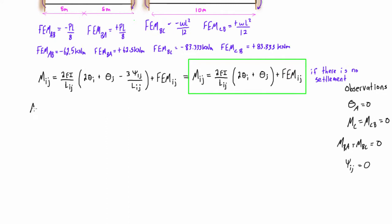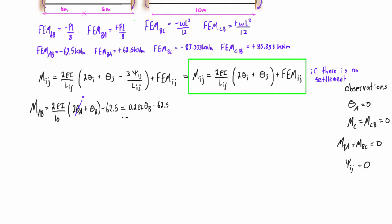For M-AB, we replace all of the I's with A's and J's with B's. We get 2EI over the length AB, which is 10 meters, times 2 theta-A plus theta-B, plus the fixed end moment for AB which is minus 62.5 kilonewton-meters. Since theta-A equals zero, that term drops out, giving us M-AB equals 0.2 EI theta-B minus 62.5.